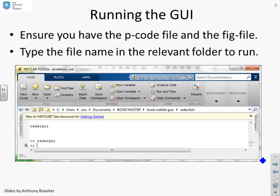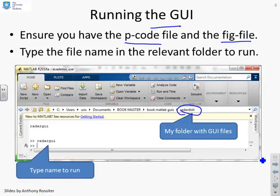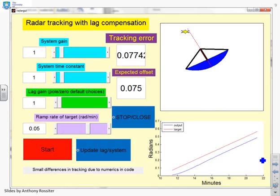Now to run the GUI, which you can use to play around, you need the pcode file and the fig file. And then in simple terms, make sure you're in the right folder. You can see this is the folder where I've stored mine. And then simply type the file name, which here is RadarGUI.